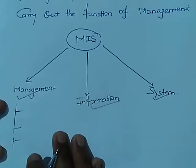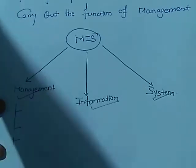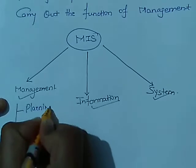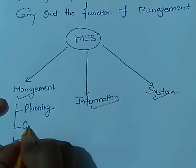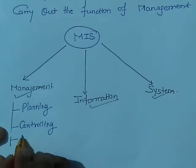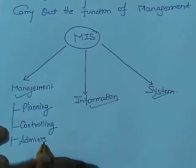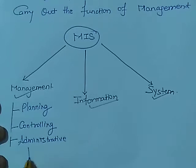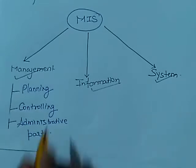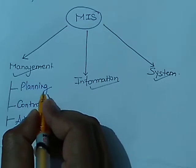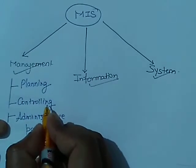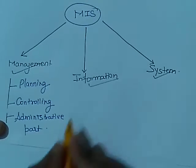Management is basically involved in planning, controlling, and the administrative part. The top management handles the planning part. The middle management concentrates on the operation, that is the controlling, and the lower management is concerned with the actual administration.